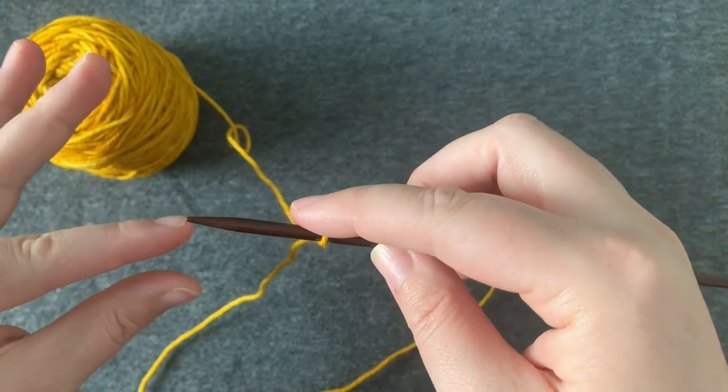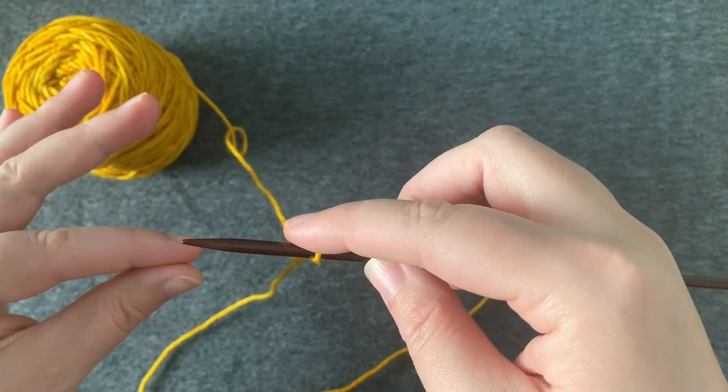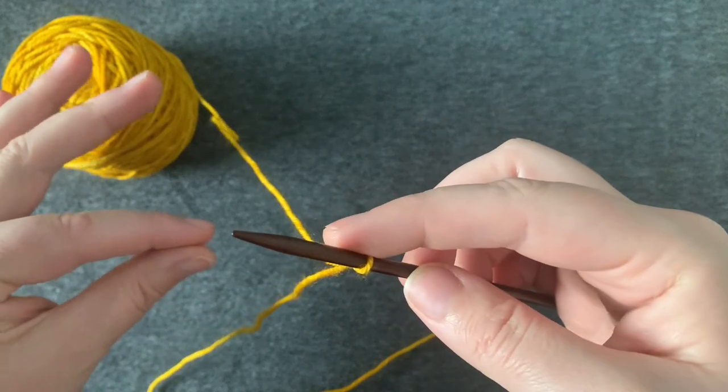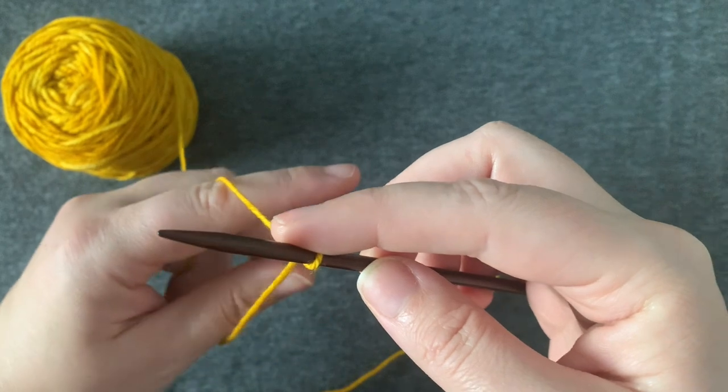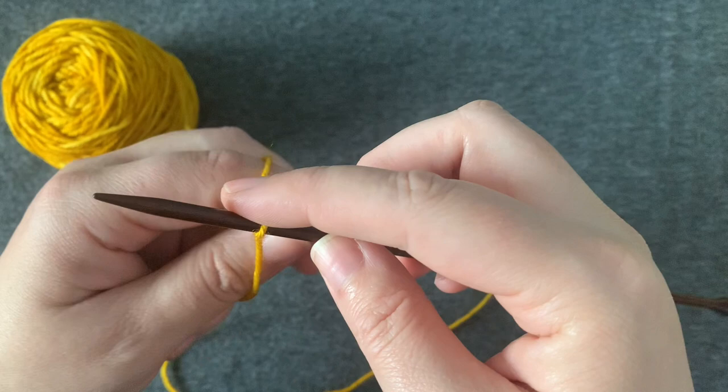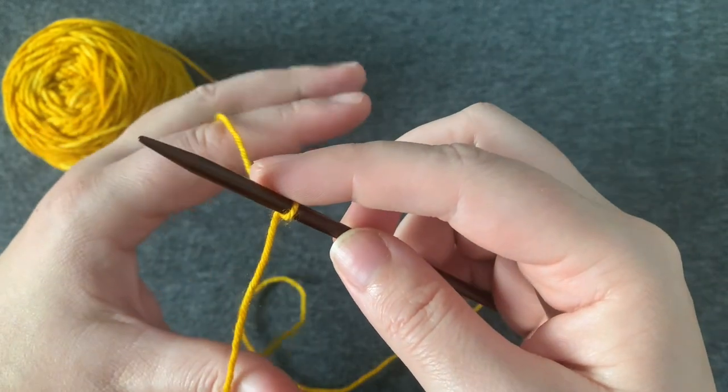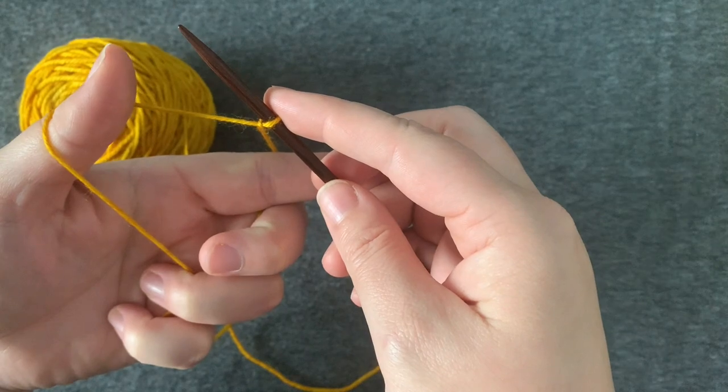Next, I'm going to pinch together my index finger and thumb, and I'm going to put it through these two strands. So I've got the one coming from the ball over my index finger and the tail over my thumb. And with the rest of my fingers, I'm going to grab the rest of the yarn.